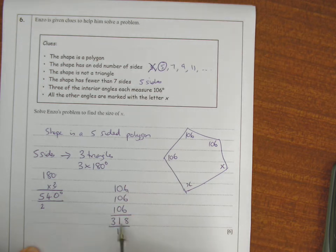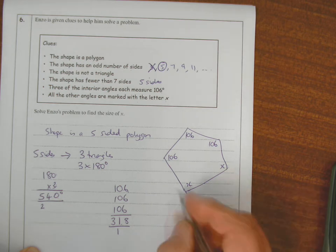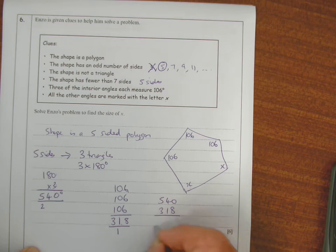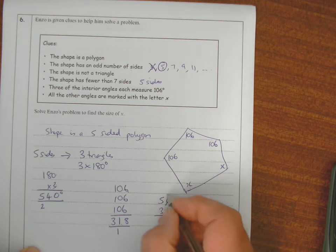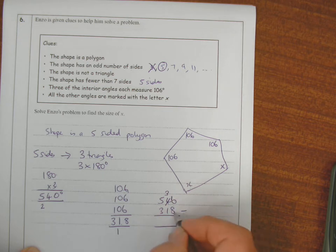So if I take 318 away from 540, I find out what these two angles add up to. 540 take away 318: can't do 0 minus 8, so borrow from the 4, making it 3, and the 0 becomes 10. 10 minus 8 is 2, 3 minus 1 is 2, 5 minus 3 is 2. That's 222.